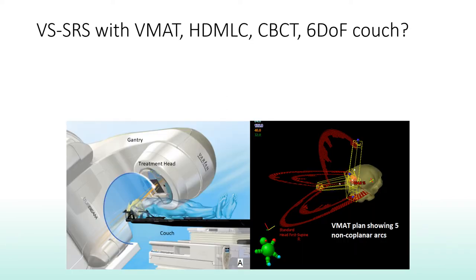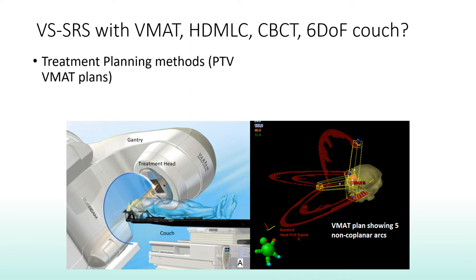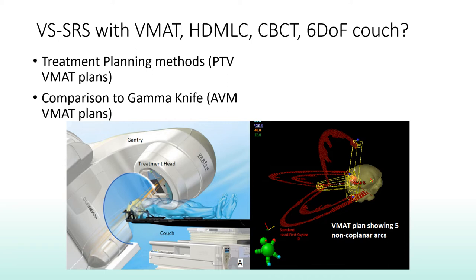Since we found little evidence on the use of LINAC systems for volume staging, we studied the feasibility of implementing it on our Varian TrueBeam SRS system. We prepared volume stage plans that we call PTV VMAT plans, as they used the 1 mm margin established for cranial SRS. We also calculated AVM VMAT plans with 0 mm margin so we could make comparisons to published data from Gamma Knife plans.